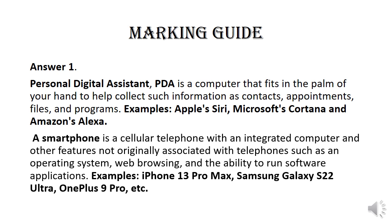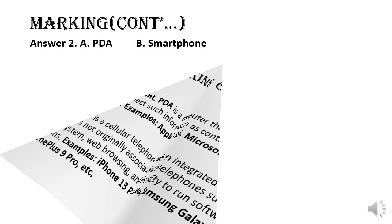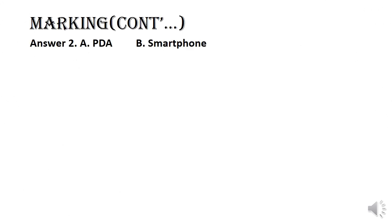A smartphone includes features such as an operating system, web browsing, and the ability to run software applications. Examples are the iPhone 13 Pro Max, Samsung Galaxy S22 Ultra, and so on.